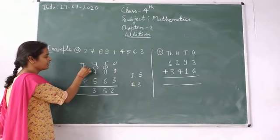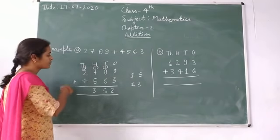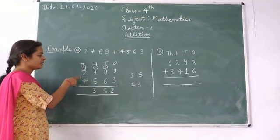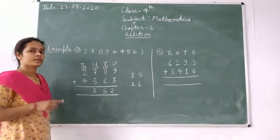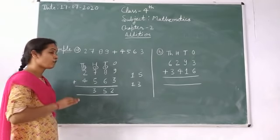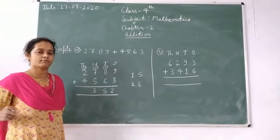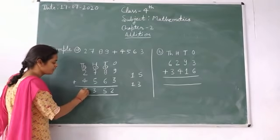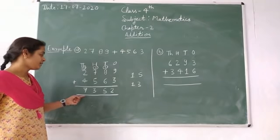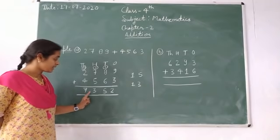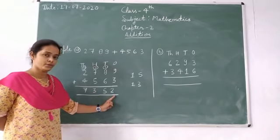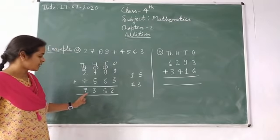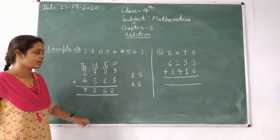One carried, moves on to the thousands place. Next: one plus two — we get three. Then three plus four — four numbers forward from three — we get seven. Finally, our answer is seven thousand three hundred fifty-two. The total sum equals seven thousand three hundred fifty-two.